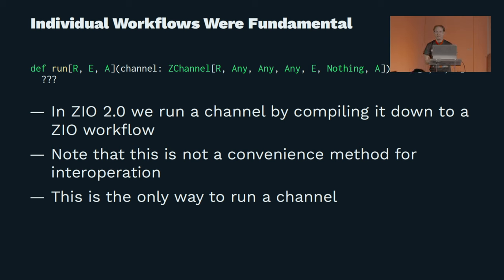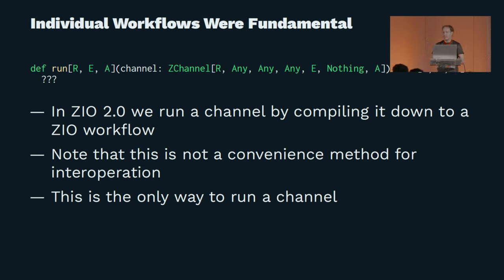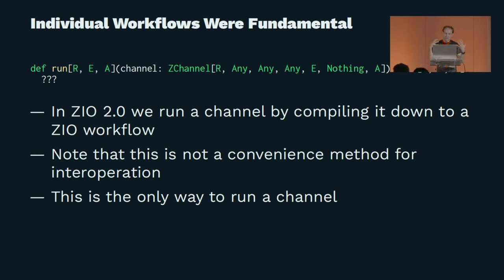But even though we had this different encoding of a channel, when we looked at how to run channels we still had a run method that took a channel and gave us back a ZEO. This wasn't just a convenience method — the only way to run a channel was by using ZEO. If you looked inside at what the channel executor did, it was all implemented in terms of ZEO, except for very simple synchronous cases.